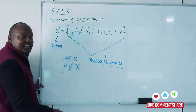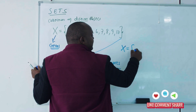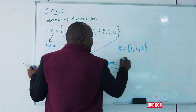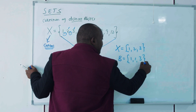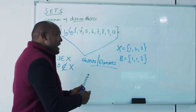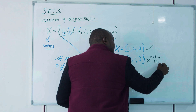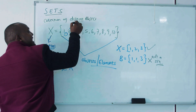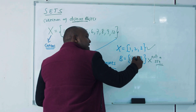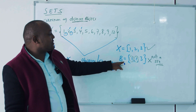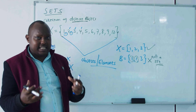If I have two sets — set X and set B — you realize that one may be a valid set while the other is not. Why? Because we said a set must have distinct elements. If one element is being repeated in set B, that makes it not a valid set.